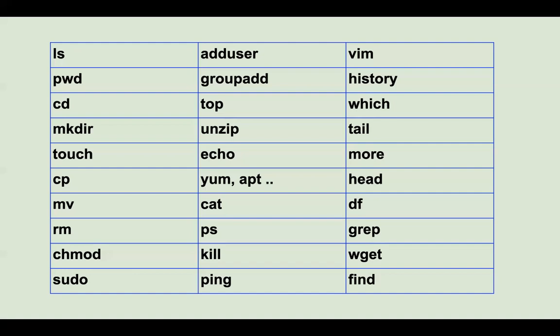Next is 'tail'. tail shows the last lines of a file. For example, 'tail -5 filename' gives the last 5 lines, and 'tail -100 filename' gives the last 100 lines. Similarly you have 'head'. 'head -5 filename' gives you the first 5 lines. So tail prints the last N lines and head prints the first N lines of a file.